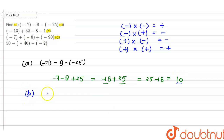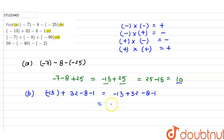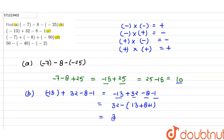The second part B is: minus 13 plus 32 minus 8 minus 1. Here minus 13 is minus 13 and plus 32. We take minus common from the three terms — minus 13, minus 8, and minus 1 — leaving 32 minus (13 plus 8 plus 1), which is 32 minus 22. That gives 10, so 10 is the answer of the second part.